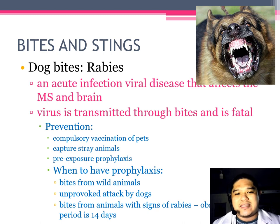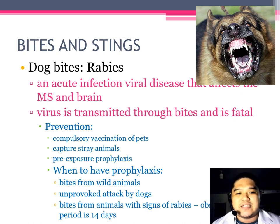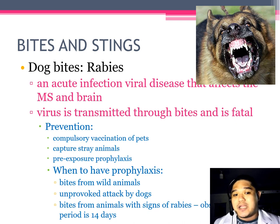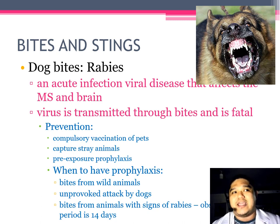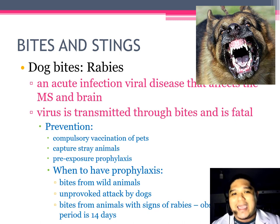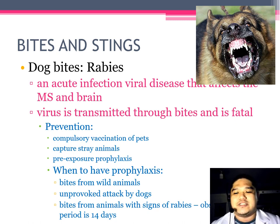When we sustain a bite from a wild animal, we should get shots for rabies. If there is an unprovoked attack by any dog — be it a stray dog or a household dog — or bites from animals with signs of rabies, there could be an observation period of 14 days. If the animal dies within that period, it may be infected by rabies. But we don't want to wait 14 days to get vaccinated. From the time of the bite, you should immediately seek consultation and get vaccinated.